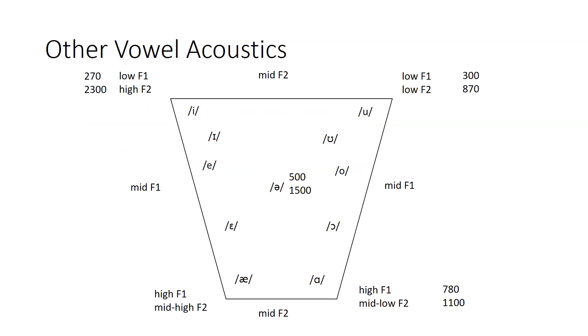Here is a vowel quadrilateral with the vowels laid out on it in sample locations. And our typical speaker corner vowel acoustics marked for /i/ in the upper left, /u/ in the upper right, and /ɑ/ in the lower right, where F1 and F2 follow the pattern of a high F1 for low vowels and a low F1 for high vowels.